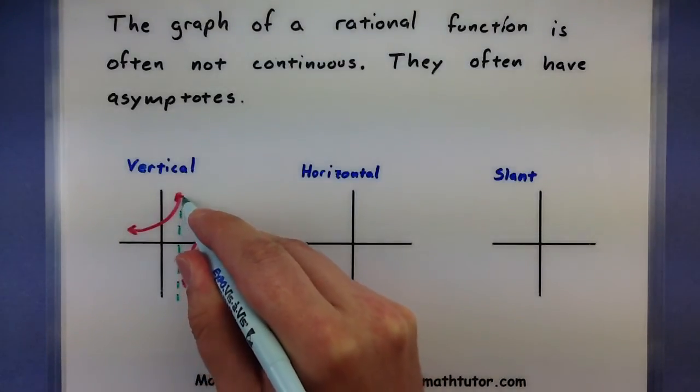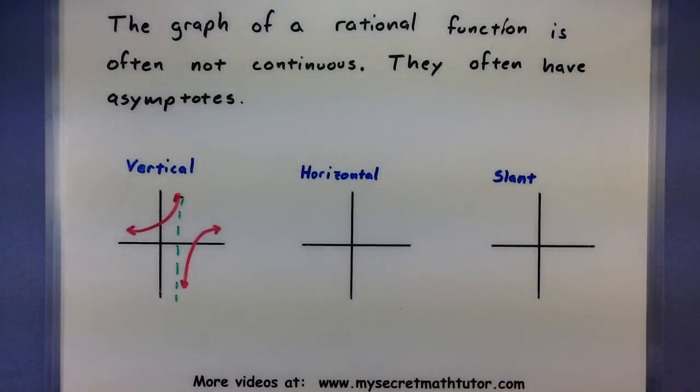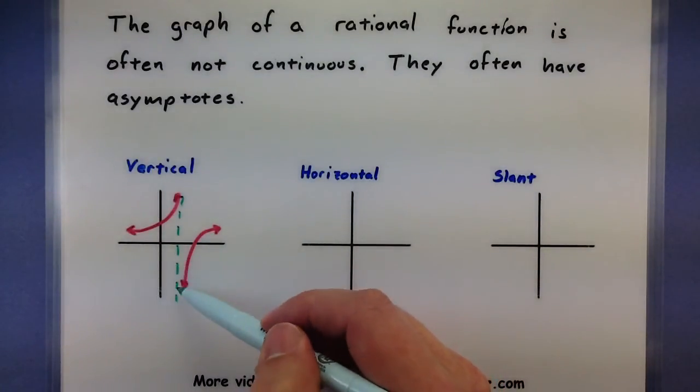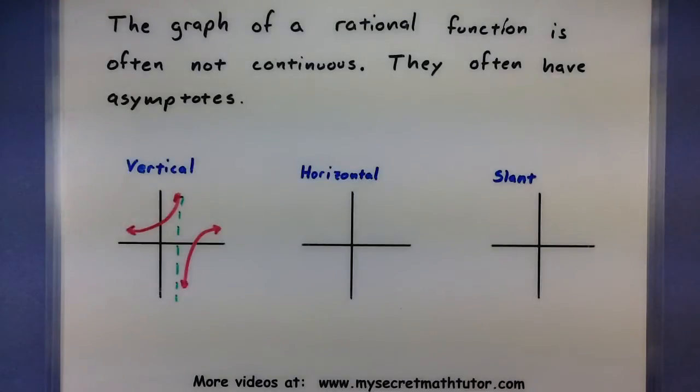So imagine a straight line straight up and down. And what we're actually seeing here is that the graph wants to get really close to this line, even though it never quite gets there.